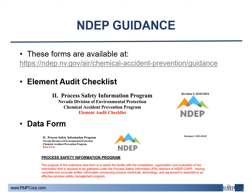The element audit checklist is used by NDEP for facility audits, and can also be used to perform the triennial internal compliance audit required by Nevada CAP. The data form provides additional details regarding all the requirements listed on the checklist items. In regards to the PSI program, it provides facilities help with the compilation, organization, and evaluation of information that is required to be gathered for the PSI program.